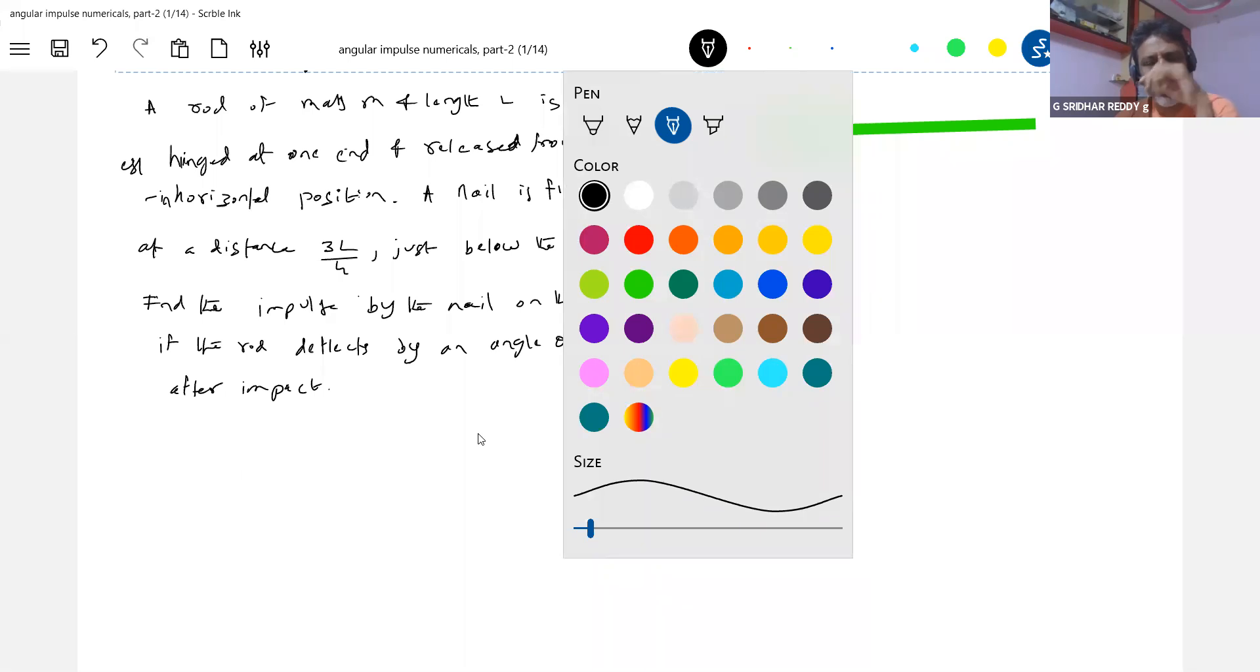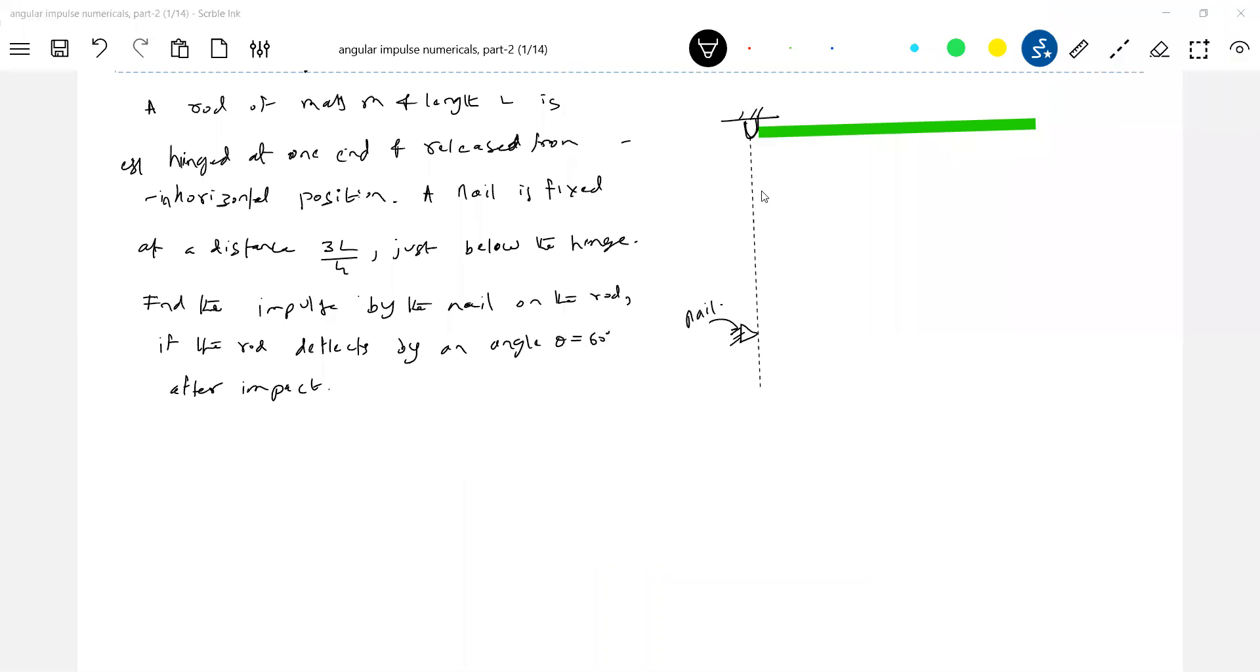The question: There's a rod of mass m and length l hinged at one end and released from rest. In the horizontal position, a nail is fixed at a distance 3l/4 just below the hinge. Find the impulse by the nail on the rod if the rod deflects by an angle θ = 60° after impact.